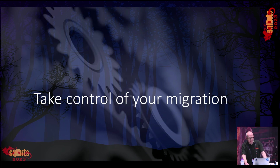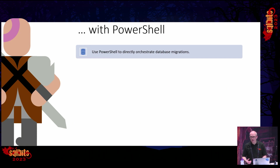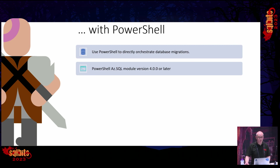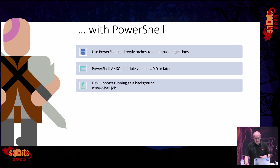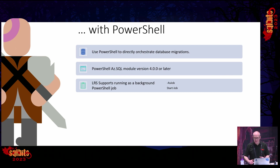So let's look at how we can take control of the migration using LRS — and we do this with PowerShell. PowerShell lets us create custom migrations orchestrated directly using PowerShell commands. We need the Azure SQL PowerShell module version 4 or later. We can also run LRS as a background job using the -AsJob parameter or the Start-Job command. When we start LRS in continuous mode, the clients run synchronously and need to wait on the API to respond with success or failure. Using background jobs means the start LRS command returns control back to the script immediately, allowing us to continue with the next database backup job and build scalable scripts to migrate large databases concurrently.